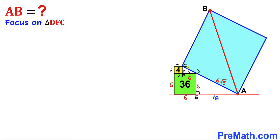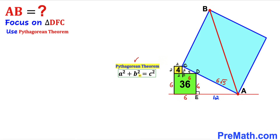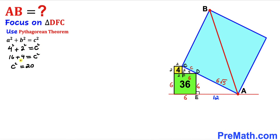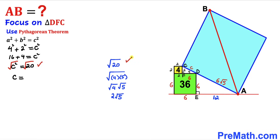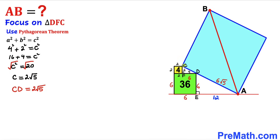Now let's focus on the other right triangle DFC. We are going to use the Pythagorean theorem once again to find the side length CD. So 4² plus 2² equals c², giving c² = 16 + 4 = 20. Taking the square root of both sides, c equals √20, which simplifies to 2√5. Therefore our side length CD is 2√5.